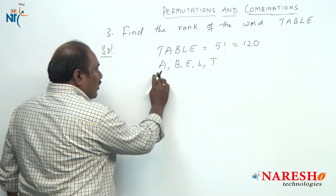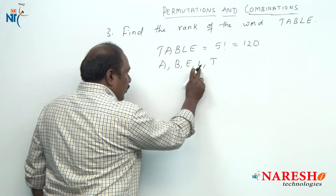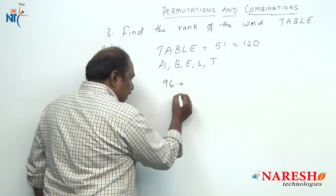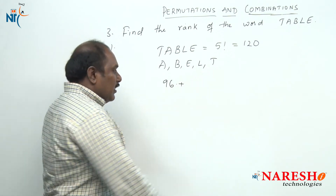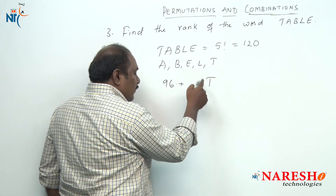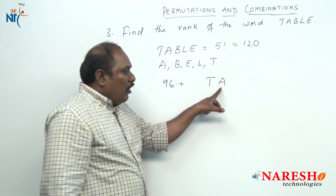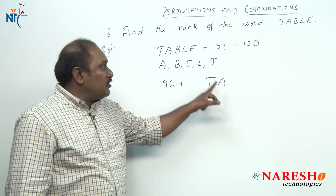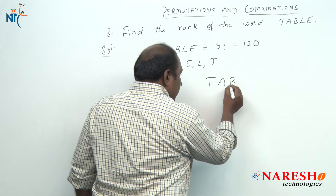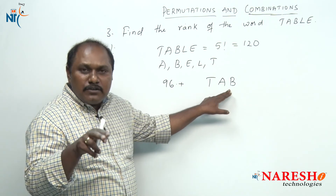So we have 24 starting with A, 24 with B, 24 with E, and 24 with L — that is totally 96. I can clearly say my answer lies in the last 24, which are the arrangements starting with T. In this 24, the first 6 will be arrangements starting with TA. My word also starts with TA, so my answer lies there. In that 6, the first 2 will be arrangements starting with TAB — my answer is in the first 2 itself.